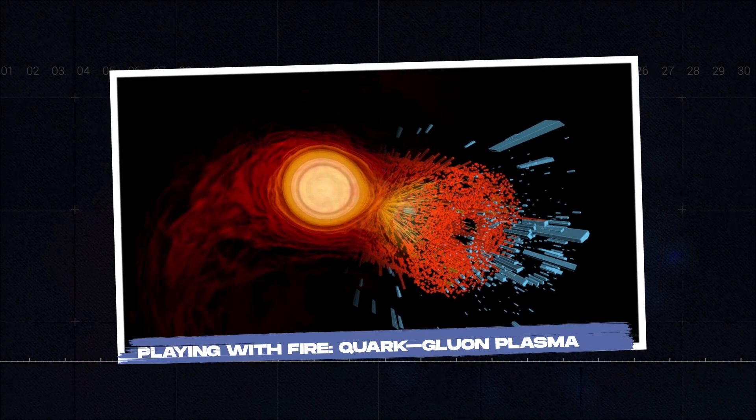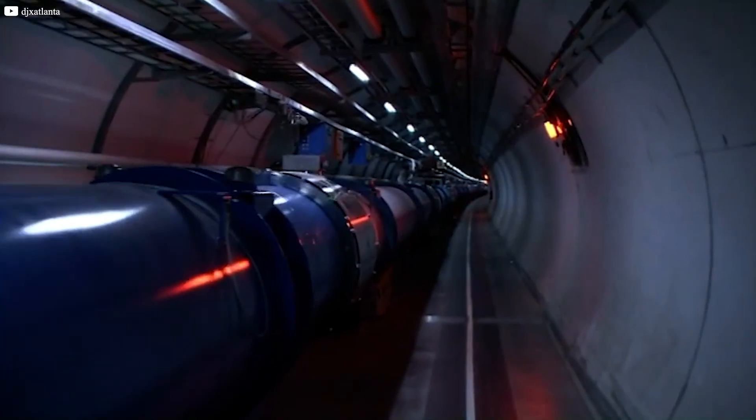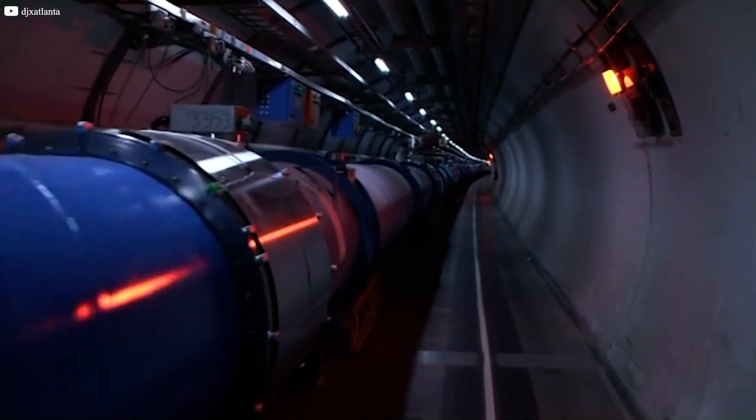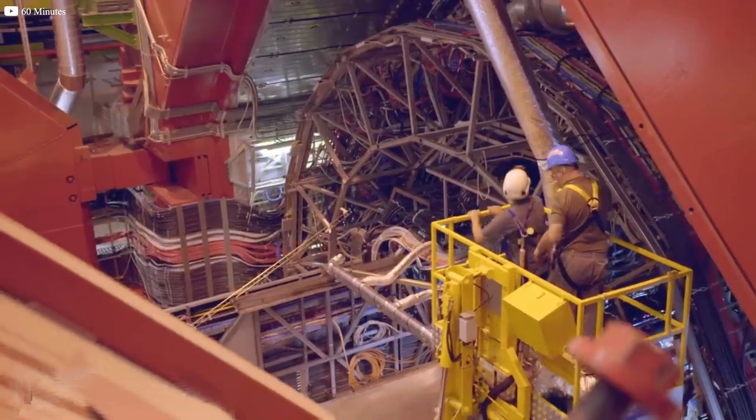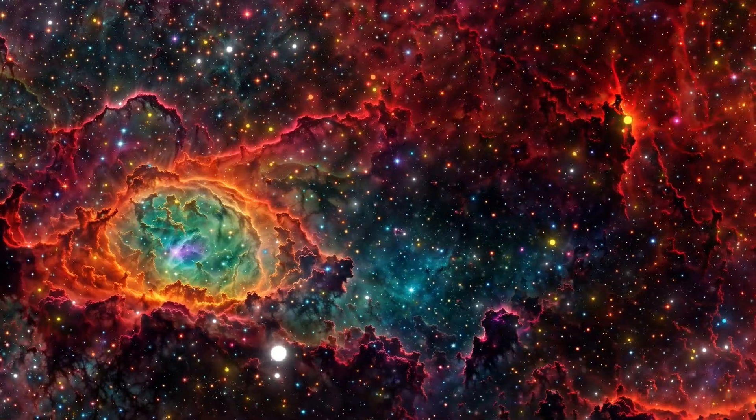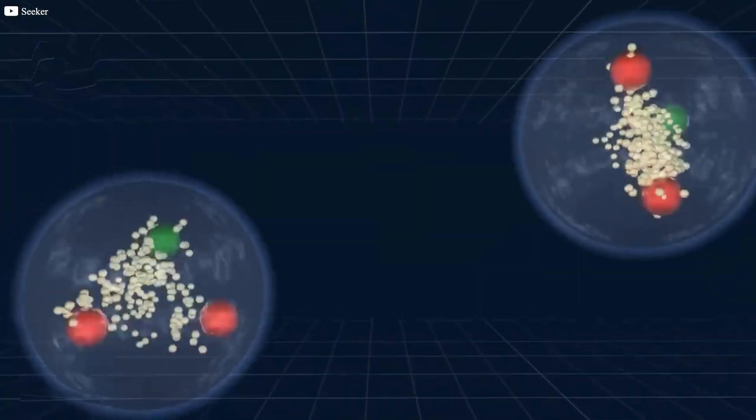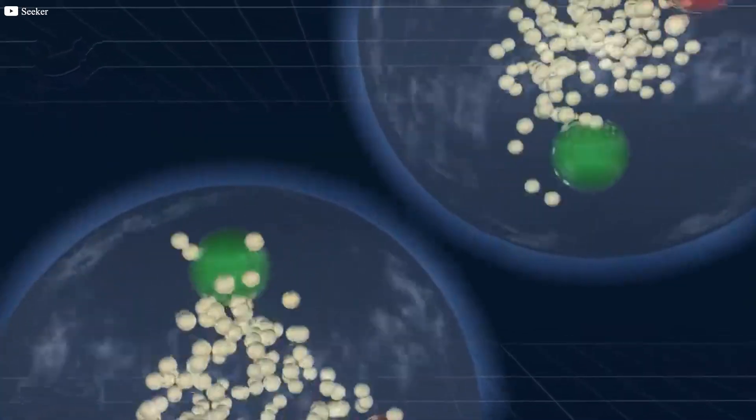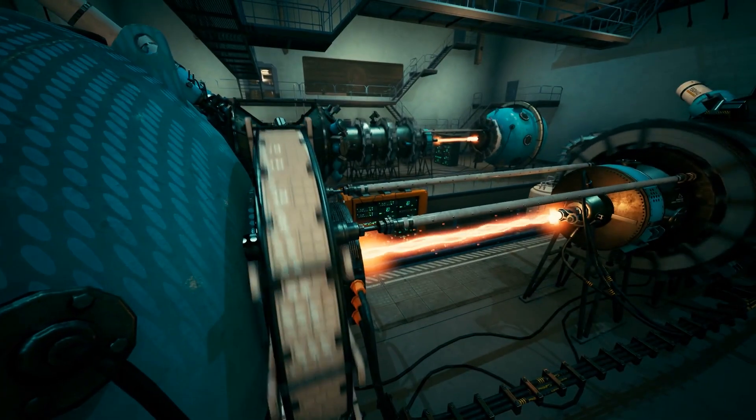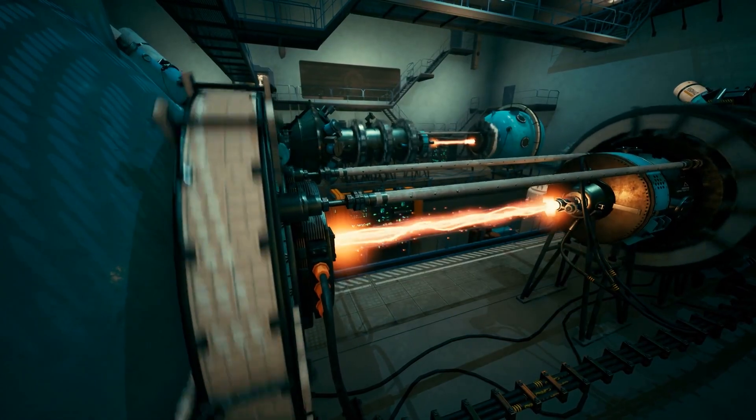Playing with fire: quark-gluon plasma. The Large Hadron Collider was not only built to find black holes. Another goal was even bolder. Scientists wanted to recreate conditions that existed right after the birth of the universe. In those first moments, matter as we know it did not exist. Instead, there was a strange liquid of quarks and gluons, hotter than the core of the sun.